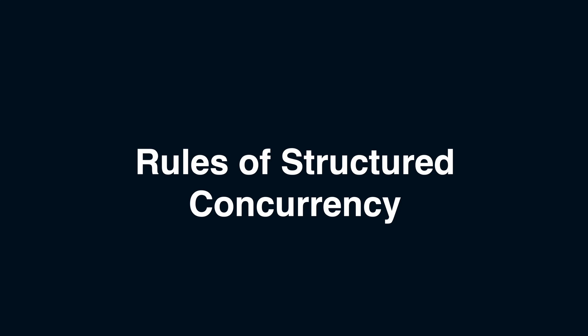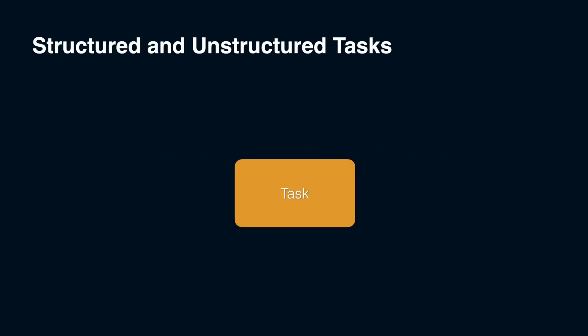Hey folks! In the previous video, we covered the key aspects of Swift concurrency to build a solid mental model of it. In this video, we will discuss structured and unstructured tasks. You'll see that their behavior can be tricky in some scenarios, but we'll break it down into rules to make it clear. I assume you are already familiar with the basic concepts of structured concurrency, like async let and task group. From the previous video, we know that to switch gears from sync context to async context, we need to use tasks.